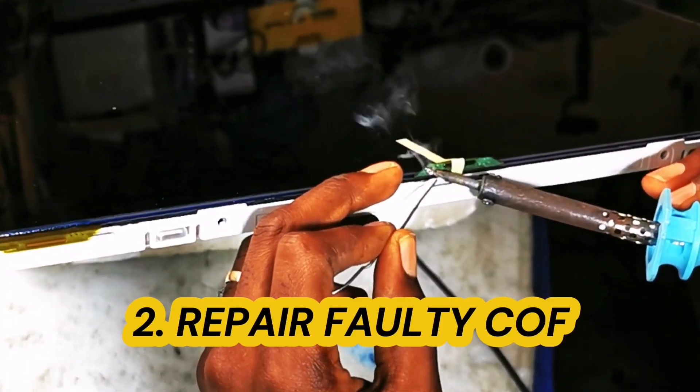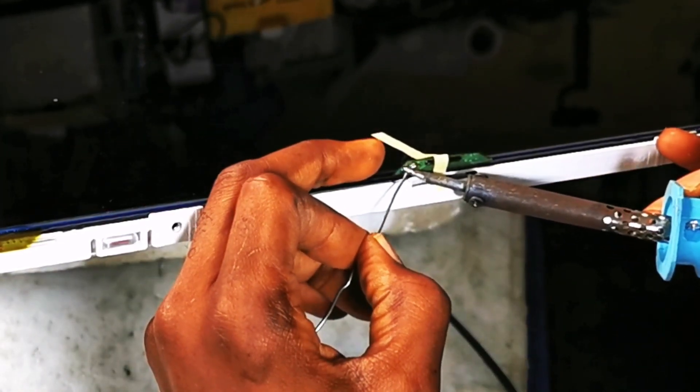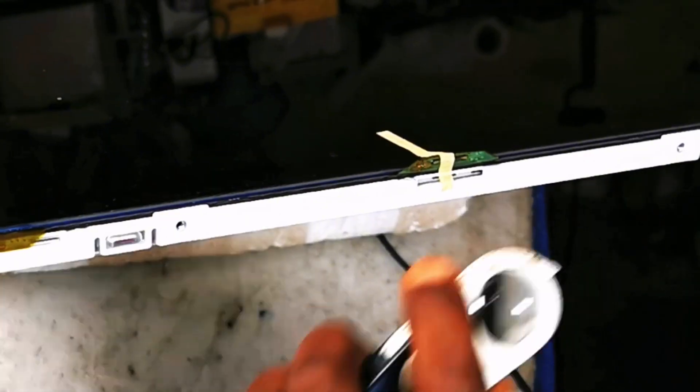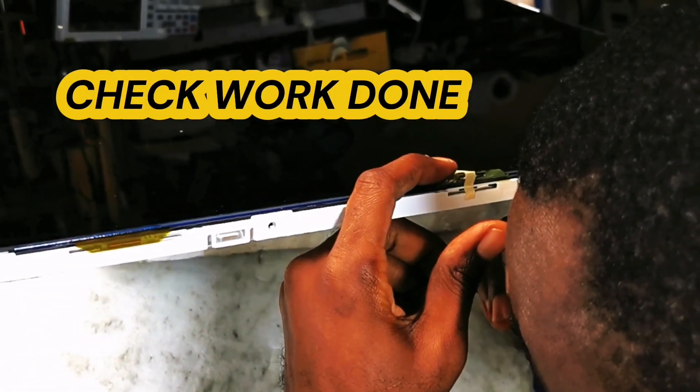The faulty COF can be repaired by applying solder to it in such a way as to reinforce the tracks that have been compromised. After soldering, be sure to check that there's no dry solder and bridges across traces.